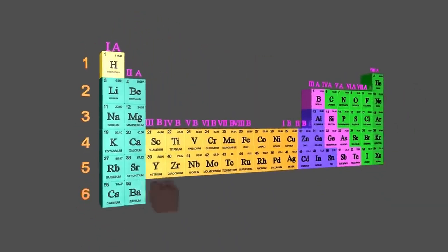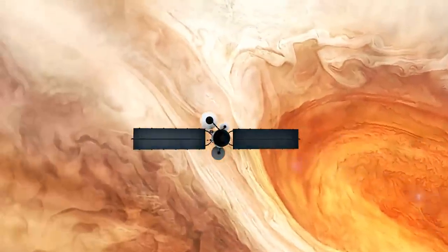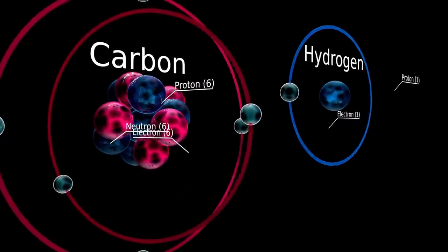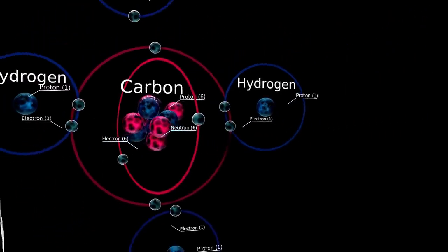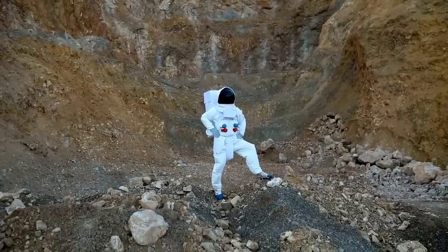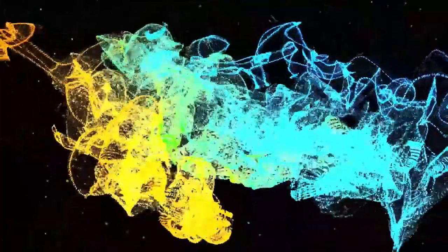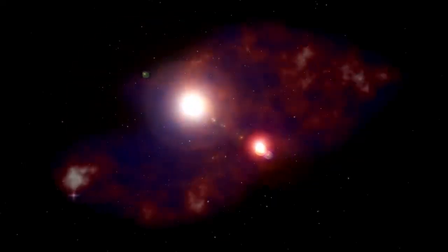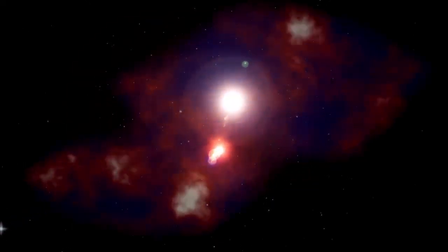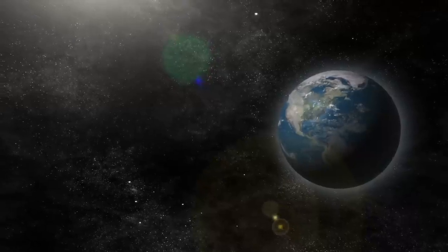What makes Proxima b especially fascinating is its proximity to Earth. At just 4.2 light-years away, it is the closest known exoplanet that might support life. It belongs to the Alpha Centauri star system, a triple star system that includes Alpha Centauri A, Alpha Centauri B, and Proxima Centauri. This makes it not only scientifically interesting, but also one of the most accessible targets for future interstellar exploration, whether by robotic probes or someday even crewed missions. Its relatively short distance on a cosmic scale makes it a practical and strategic focus for current and future astronomical efforts.